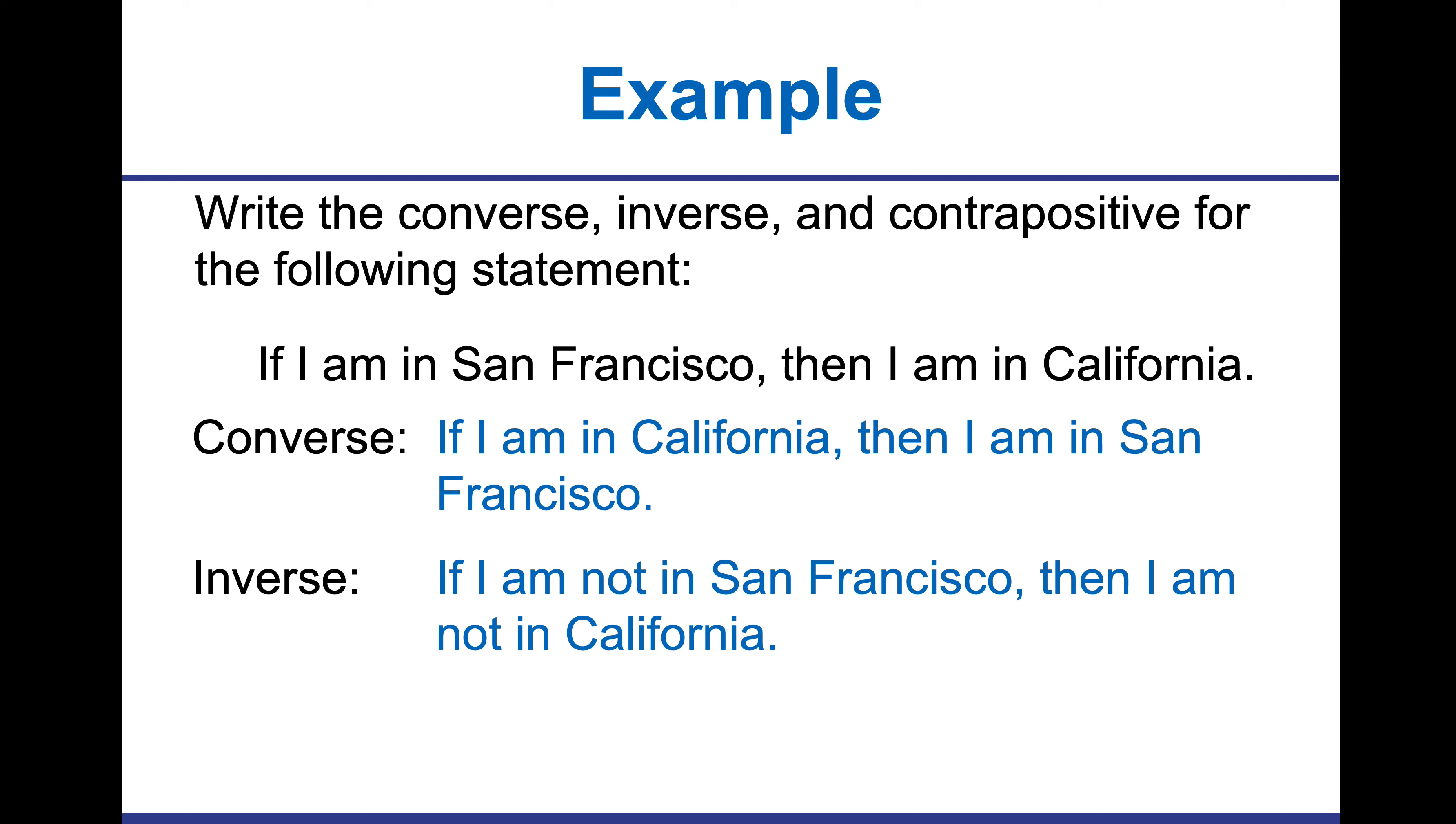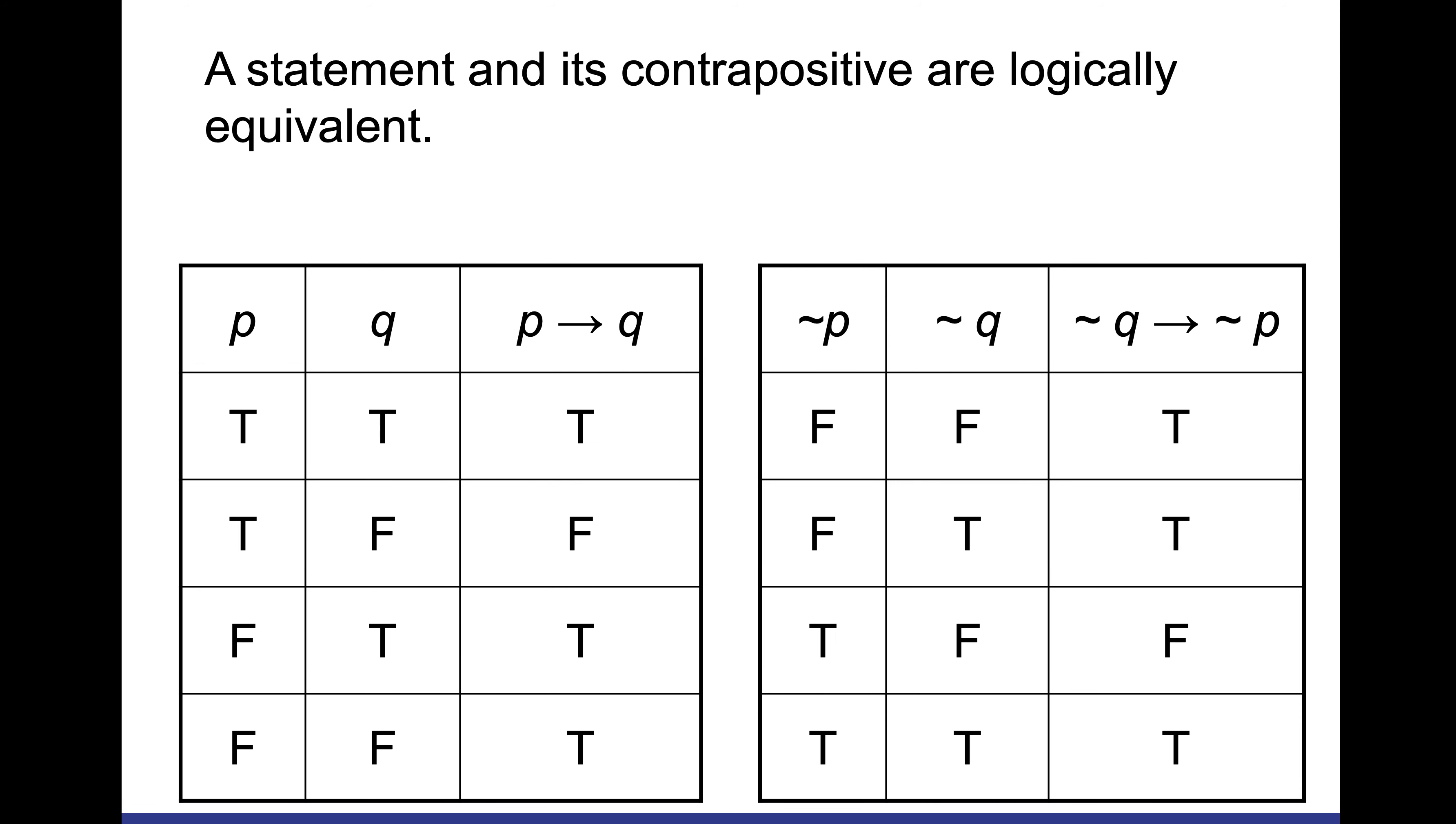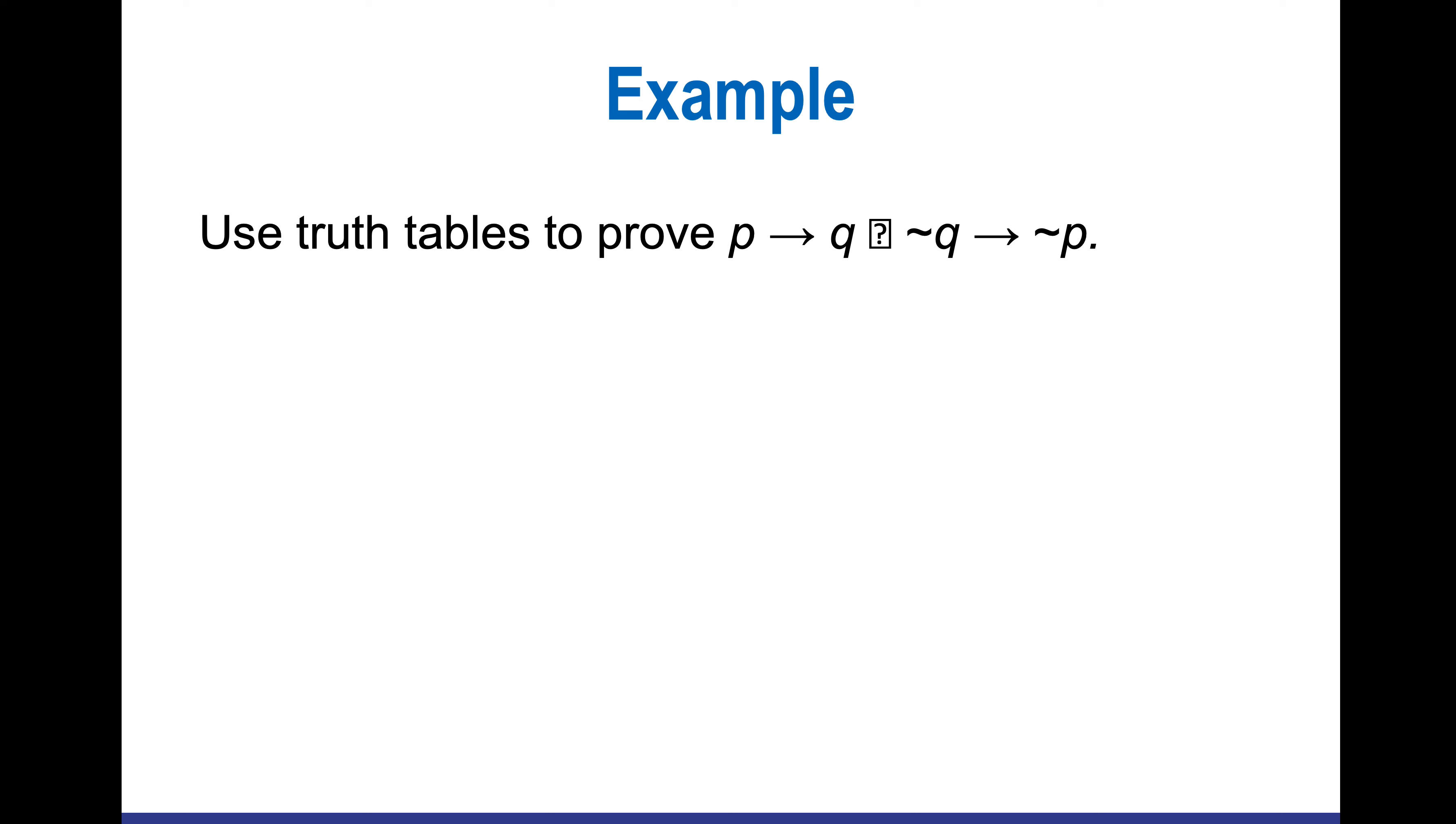The inverse would mean you're going to negate both statements. If I am not in San Francisco, then I am not in California. We know that not to be true because you could be in San Francisco and be in California. The contrapositive is we're going to flip the order and negate them. California is going to come to the beginning, San Francisco to the end, and we're going to put a not in front of it.